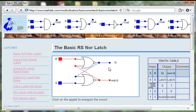As you can see, when reset is on or 1 and set is 0 or off, Q is 0 and not-Q is on, as shown on the truth table.